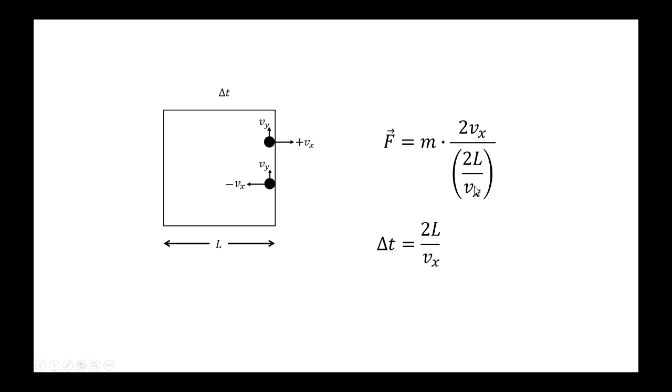So let me come up to this delta t and replace it with 2l over vx. What happens to the denominator? It's a fraction in the denominator, so that goes into the numerator, and this becomes vx squared. But the 2s are going to cancel, so I'm just going to have vx squared over l, just like that.